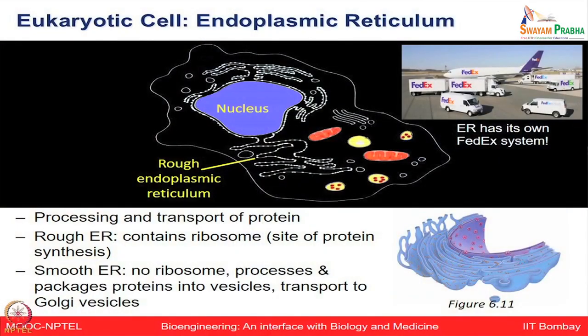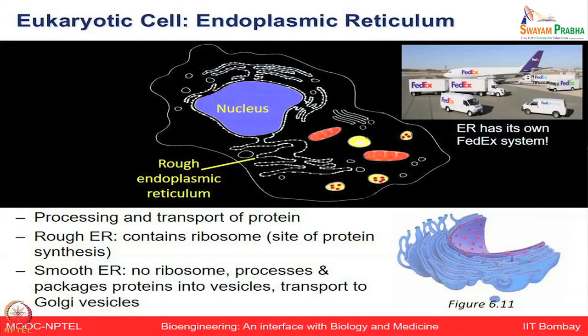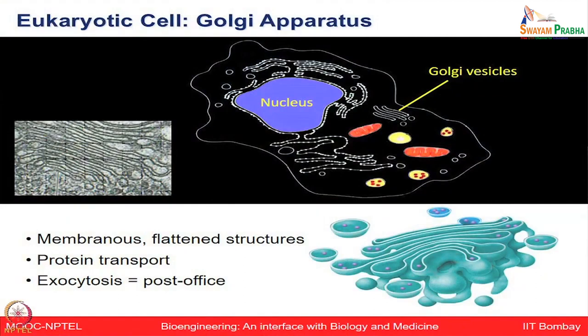There are two types of endoplasmic reticulum. Rough endoplasmic reticulum contains ribosomes and is the site for protein synthesis. Smooth endoplasmic reticulum does not contain ribosomes; it is involved very intricately with Golgi vesicles for packaging proteins into vesicles and transporting them. The Golgi apparatus is one of the membranous flattened structures that helps with protein transport and exocytosis, working very closely with smooth endoplasmic reticulum to transport proteins from one part of the cell to another.